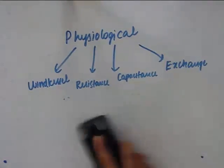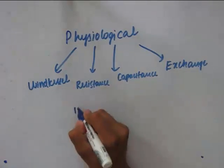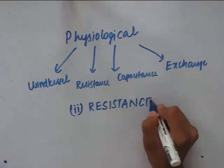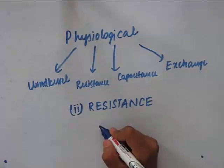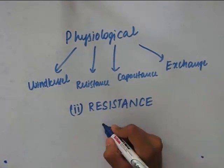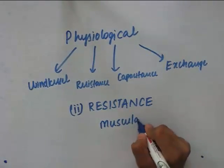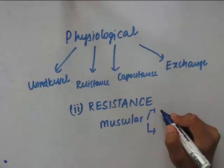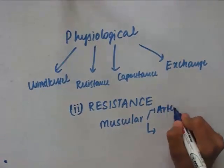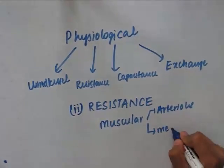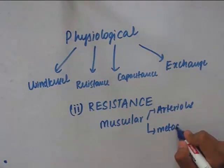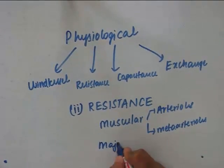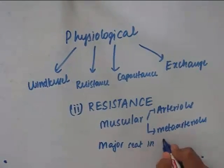Now let's study about the second category — the resistance vessels. As the name suggests, these vessels provide resistance, so they should have something tight and thicker. The muscular layer fulfills this criteria. The arteries which have a high muscle coat will fall under this category, and the vessels in this category are arterioles and meta-arterioles, as they have a thick muscular coat. These resistance vessels are the major site of peripheral resistance in the body.